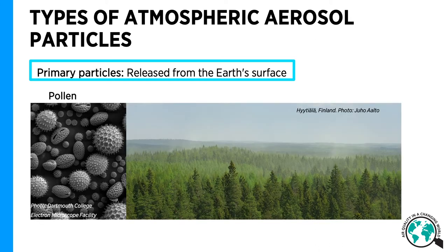Pollen is a primary particle of natural and anthropogenic origin. Pollen originates from flowers. On the left-hand side of the slide, you can see a microscope picture of pollen from various flowers. Pollen also originates from trees. On the right-hand side of the slide, you can see a fine yellowish haze, which is spruce pollen. Pollen are coarse-sized particles.